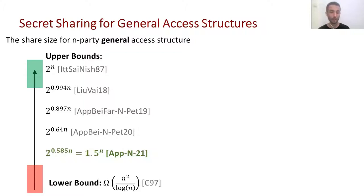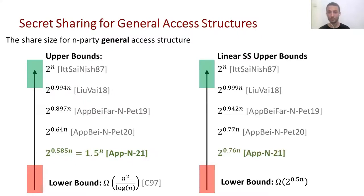As in many information-theoretic protocols, there is a huge gap between the upper bound and the lower bound, and we don't know where the truth lies. It could be that some access structures require exponential share size, or it could be that secret sharing is a polynomial protocol. There is a family of linear secret sharing schemes where every share has to be a linear combination of the secrets and random elements. For linear schemes, there is a much higher lower bound, also exponential, so the gap is only between the constants in the exponents. We also improve the state-of-the-art exponent, but only by a little bit, and the techniques we use are perhaps more interesting than the improvement itself.